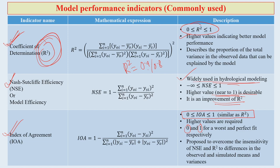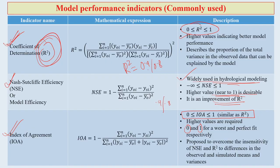When IOA equals 1, we still verify that everything is in order. Values of 0.9 or 0.8 are quite good. Importantly, IOA proposes to overcome the insensitivity of NSE and R² to differences in observed and simulated means and variance. This makes performance testing of the model more robust.